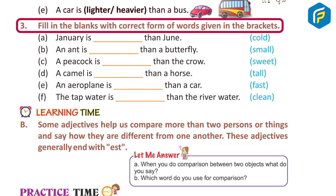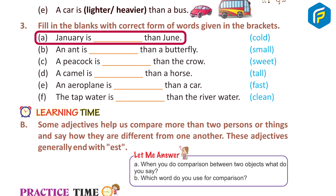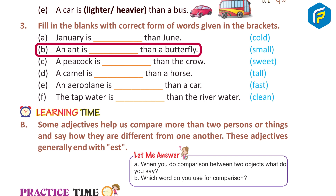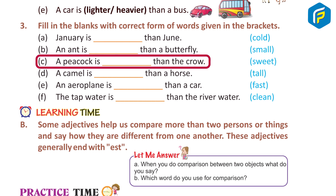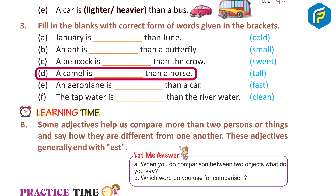3. Fill in the blanks with the correct form of words given in the brackets. A. January is colder than June. B. An ant is smaller than a butterfly. C. A peacock is sweeter than the crow. D. A camel is taller than a horse.